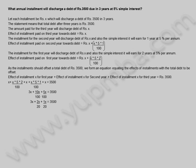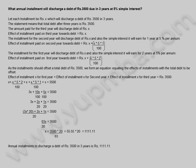Simplifying: 3X plus (10X/100) plus (5X/100) equals 3,500. Further simplifying: 3X plus (2X/20) plus (X/20), then multiplying: (3X × 20 + 2X + X)/20 equals 3,500. Solving, X equals 3,500 × 20/63, which equals 1,111.11 rupees. The annual installment to discharge a debt of 3,500 rupees in three years is 1,111.11 rupees.